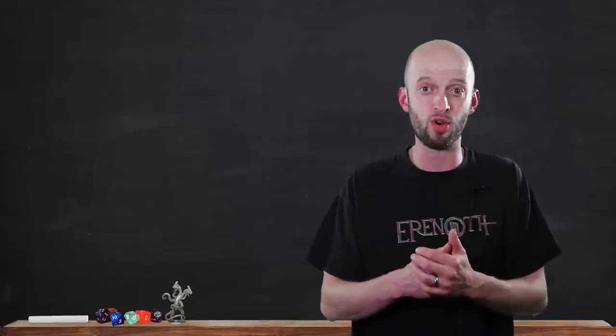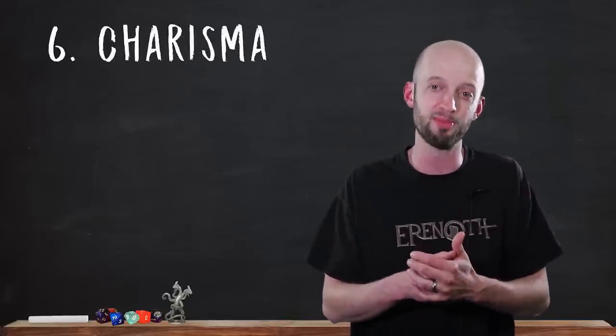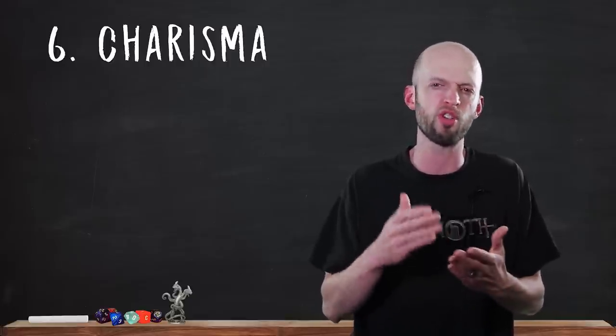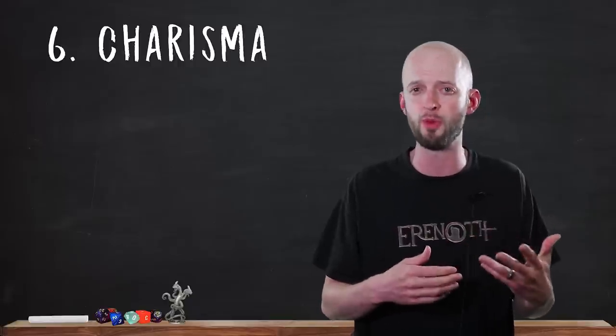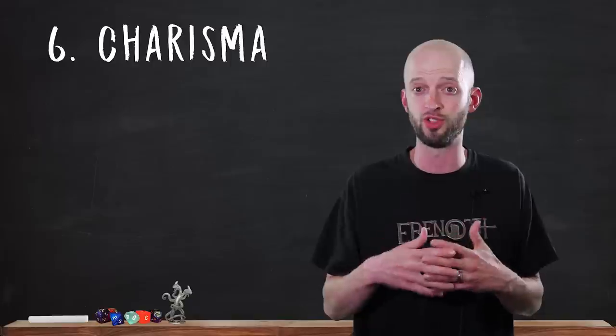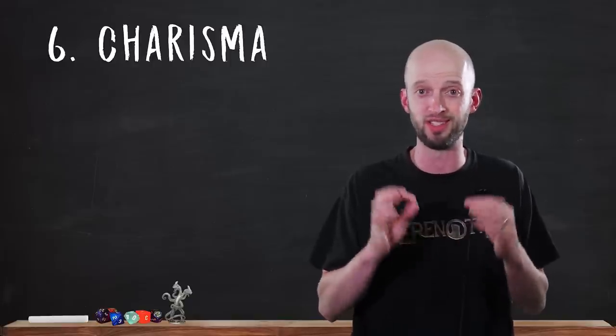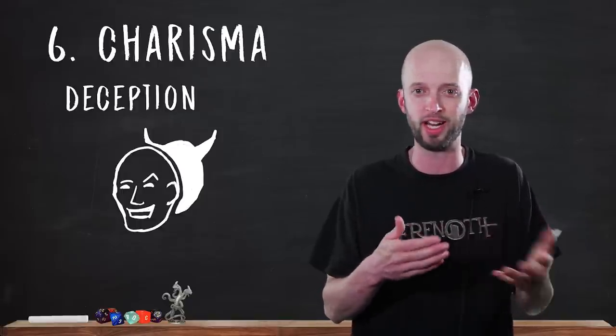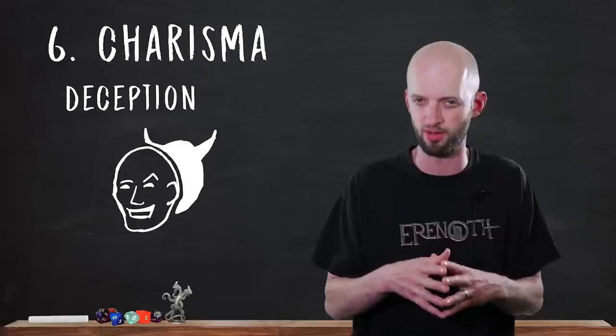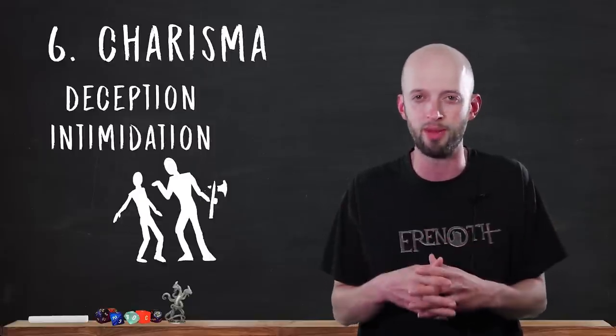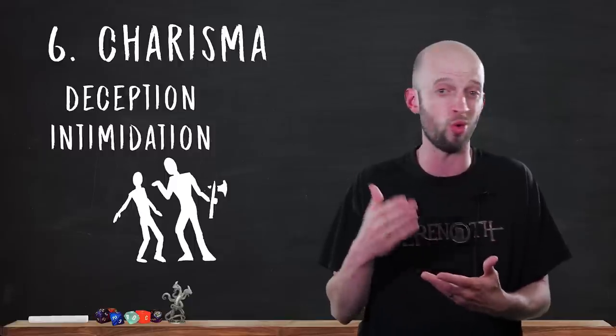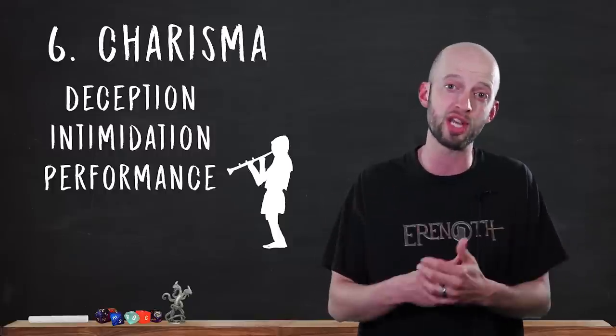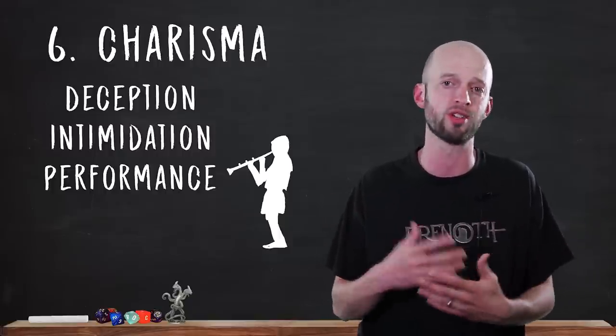The final ability score in D&D is Charisma. Charisma measures your ability to interact effectively with others. If you have high charisma, you have a force of personality. You speak well and can be charming and confident. There are several skills that use charisma. Firstly, Deception. This skill is used when you're trying to fool someone. You may be directly lying or trying to hide the truth, or it could be more subtle. Intimidation. You're trying to influence somebody by appearing threatening. This could be done with words or body language. Performance. This skill is used when you're trying to entertain with music, dancing, acting, storytelling, or something similar.